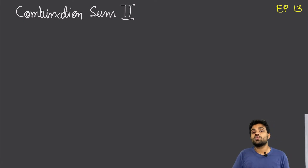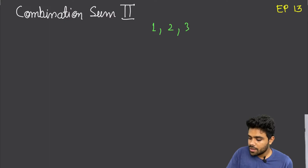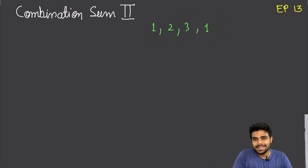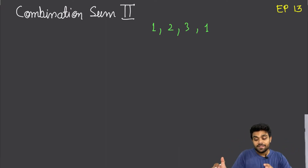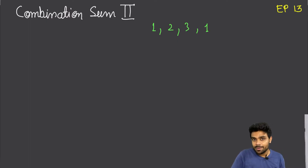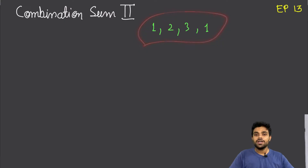Let me take an example — things will become much more clear once we start solving. We are given: 1, 2, 3, 1. You can see the elements are repeating — there are two duplicate elements. Now if we start finding all the possible subsets for this, are we going to have duplicates in the subsets? Yes — we saw this in episode number 10 where we were finding unique subsets. The problem comes when there are duplicate elements: if we go on generating all possible subsets, we will get duplicate subsets as well. We need to avoid those duplicate subsets. Here also we need to find only the unique combinations whose summation is equal to the given target.